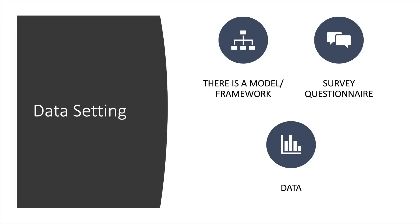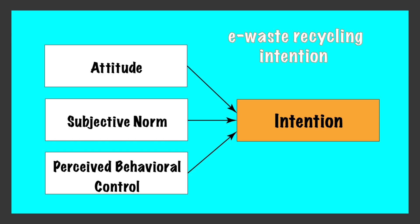So what do we mean by data setting here? I assume that at this stage, there is at least a model or framework for your study. In my case, the data I'll be discussing is about e-waste recycling intention among housewives. I'm using a TPB model where I have the attitude of housewives for e-waste recycling, the subjective norm, and the perceived behavioural control. I want to see how these three variables are going to affect their e-waste recycling intention. This model is based on your theoretical underpinning and the literature review that you have done.